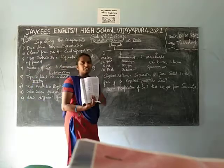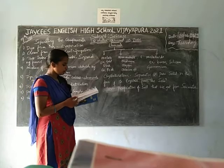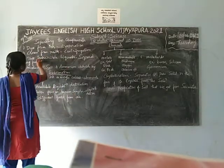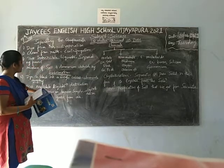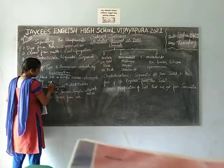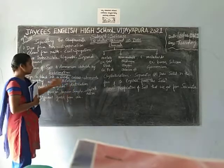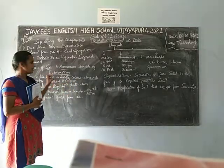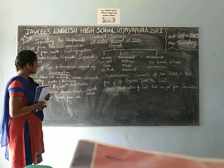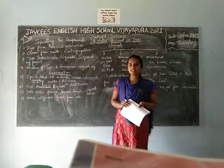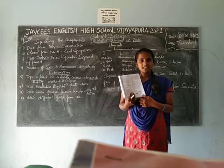See page number 21. In page number 21, how can we separate the mixture of two miscible liquids? This is done by the process of distillation, where we separate two types of molecules. That is the distillation process — see the textbook page numbers 20 and 21.